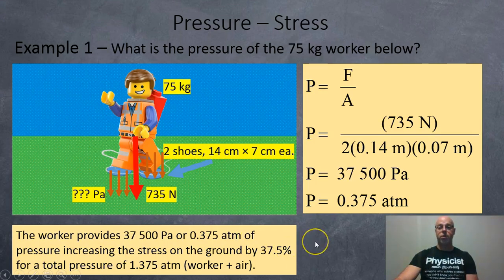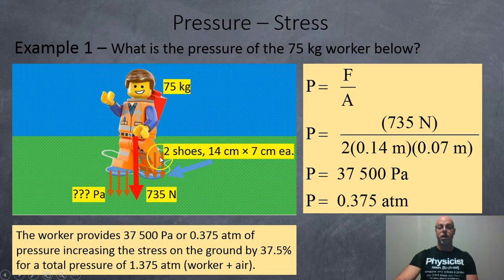So here's an example question right here. So here we got a 75 kilo worker, and they're wearing two shoes, 14 centimeters by 7 centimeters each shoe. And using our force of gravity formula, 75 kilos times 9.8 newtons per kilo is a weight of 735 newtons. And we just want to find out how many pascals of pressure this person is putting on the ground.